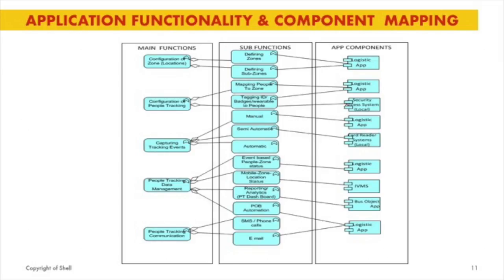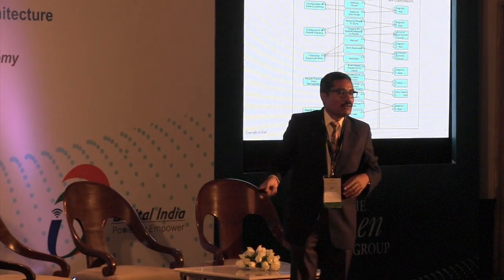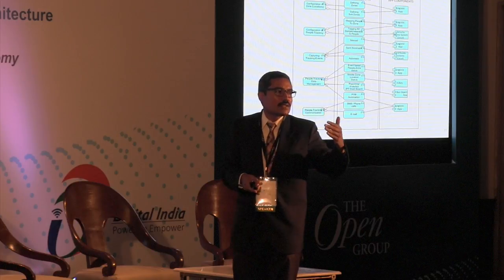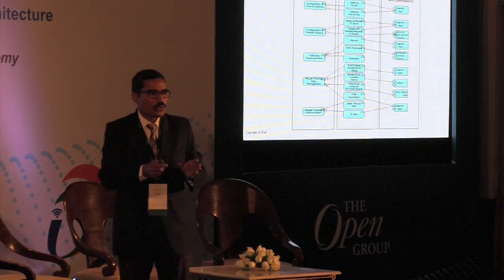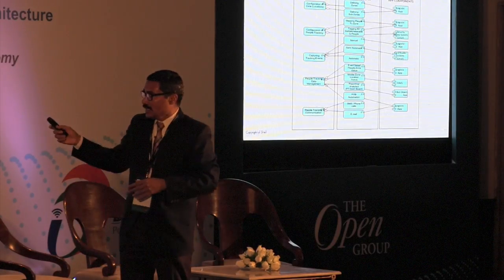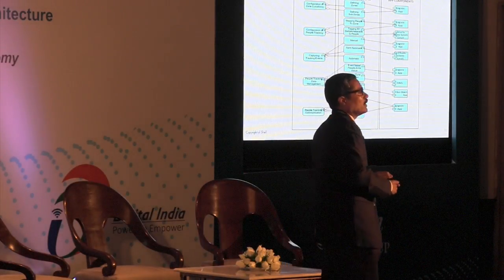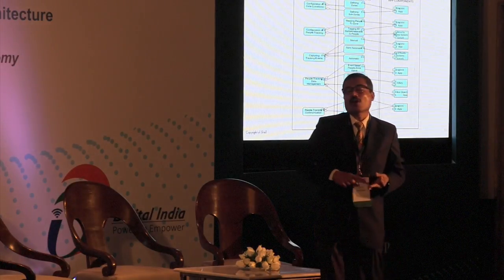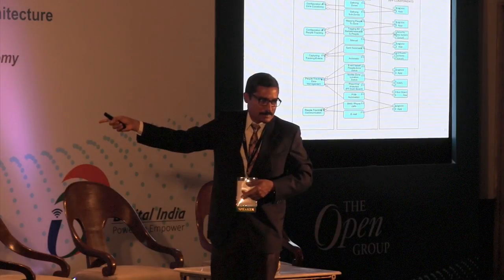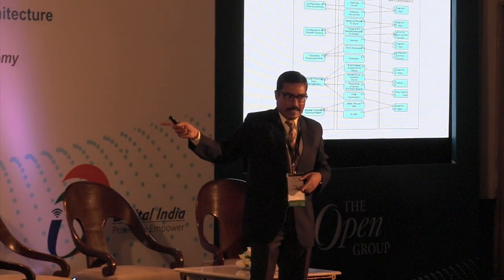This is the application functionality and component mapping. One of the important roles of an architect is to take architectural decisions, and this view helps with that. The view shows main functionality and sub-functionality modeled, with candidate solution components mapped on the right side. In this diagram we move from architectural building blocks to solution building blocks, helping you decide whether to go for a market standard solution, a proprietary solution, or to exploit existing infrastructure.